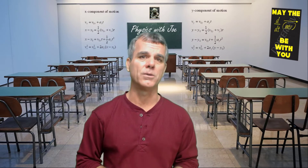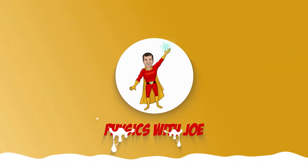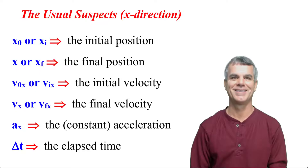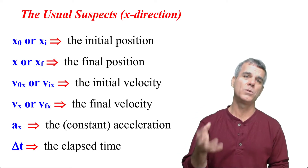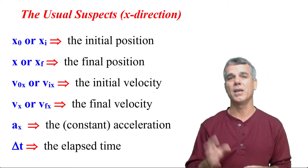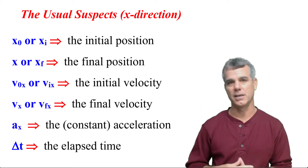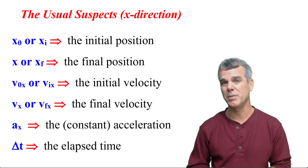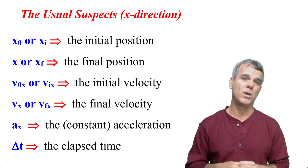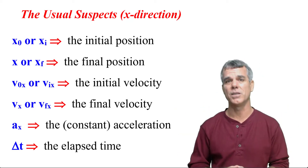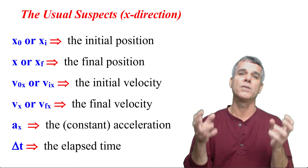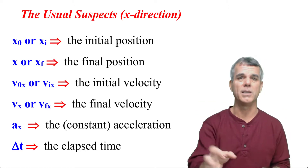So let's jump right into it. Let's begin by looking at the six different quantities that you will see whenever you're doing a problem involving constant acceleration. I call these the usual suspects because, as you'll see in a little while, anytime you're doing a problem involving constant acceleration, these are the six different quantities you will always be dealing with.